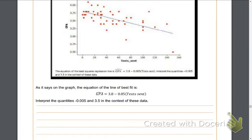Down at the very bottom, and it might be kind of hard to see, it says that the equation of the least squares regression line is GPA hat equals 3.8 minus 0.005, and then inside parentheses, texts sent. And our focus is going to be on this equation.